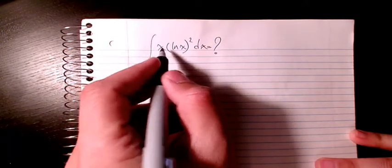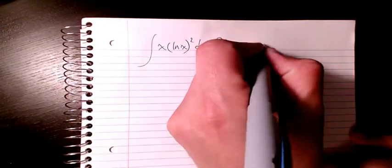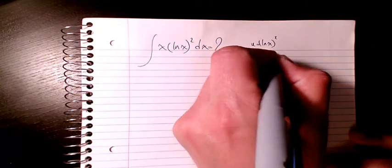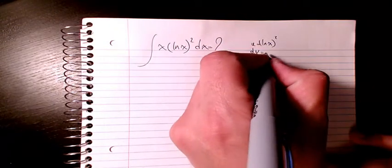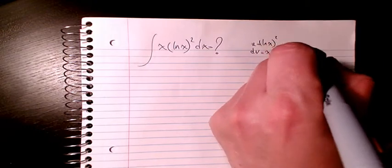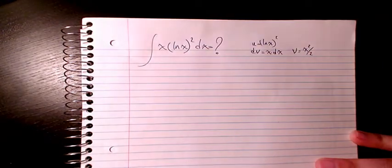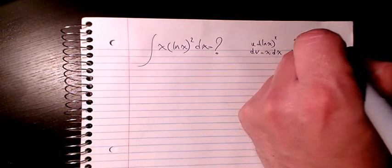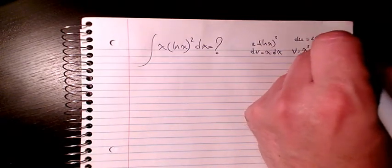I consider u as ln x squared and dv is going to be x times dx, so v will be x squared divided by 2. And the derivative of u, which is du, is going to be 2 ln x, 1 over x.